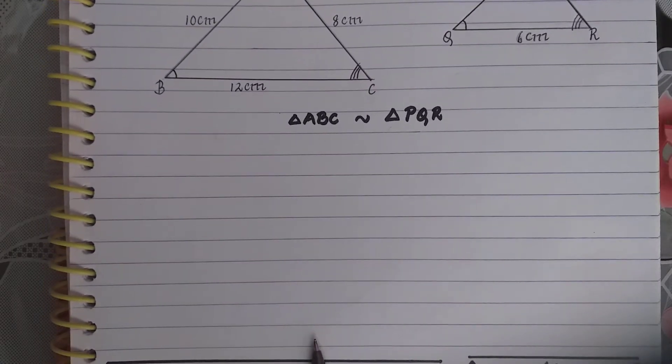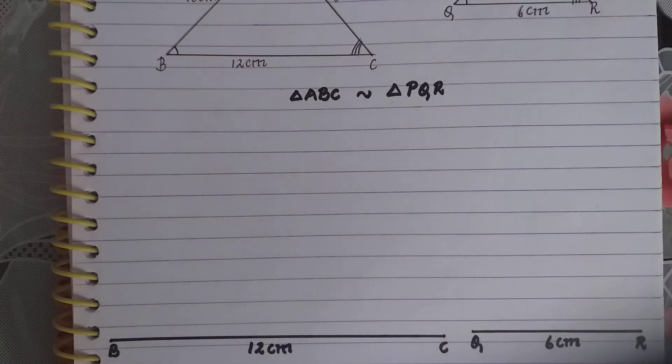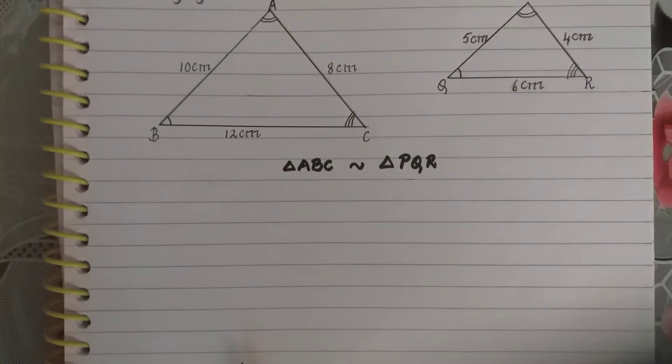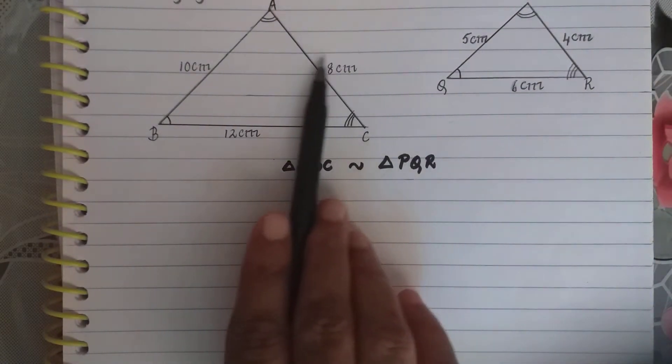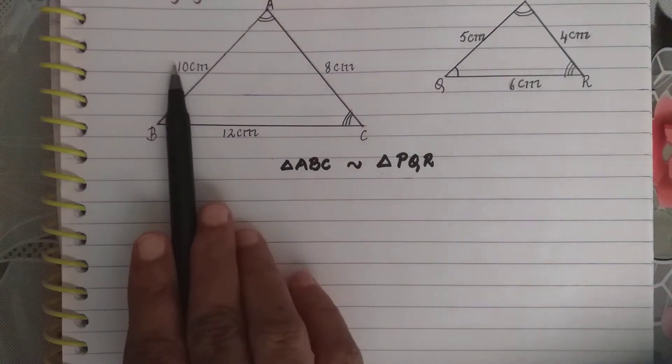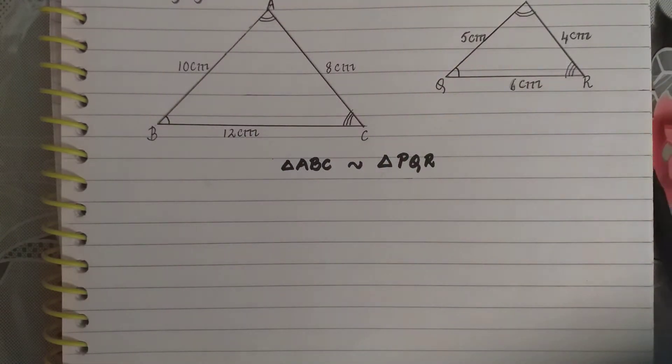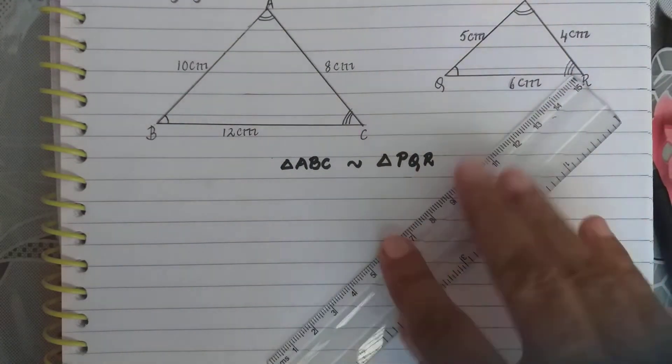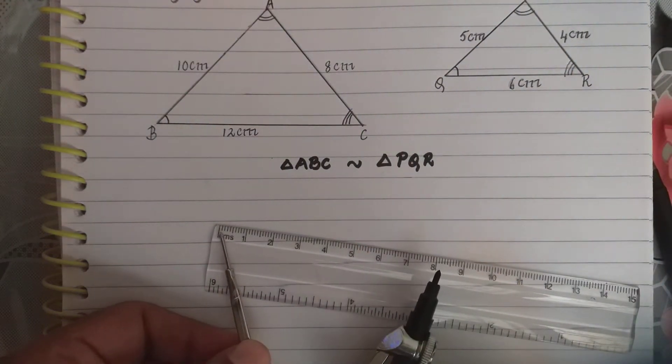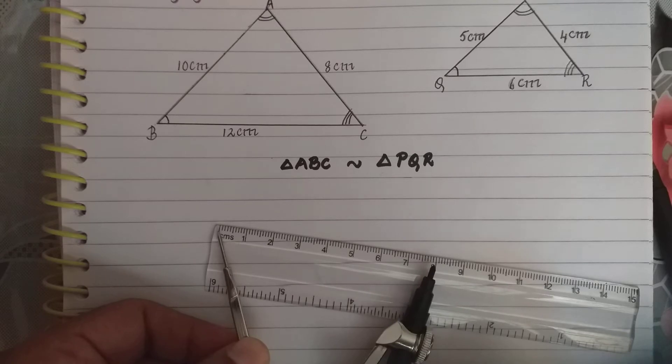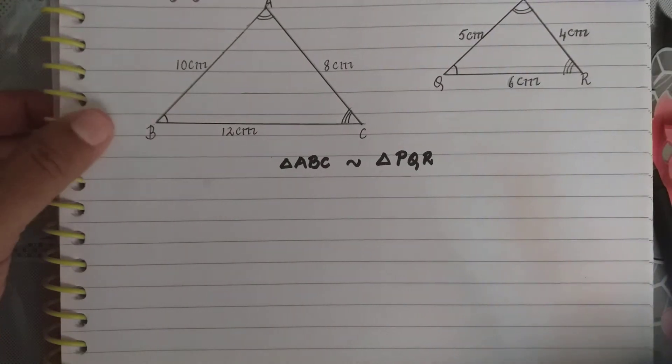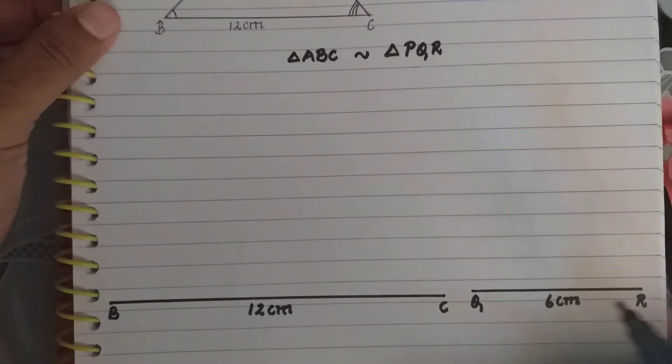Now when I am drawing triangle ABC, the base BC should be 12 cm. I need to draw 8 cm here and 10 cm here. So I take the scale and measure 8 cm. And from point C,